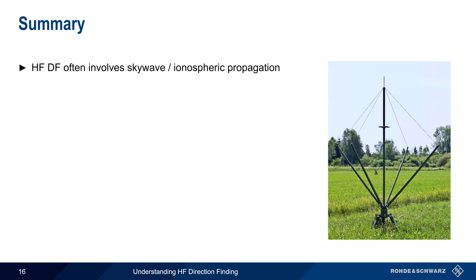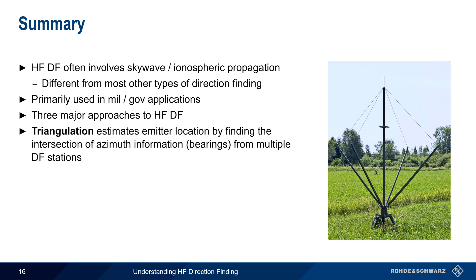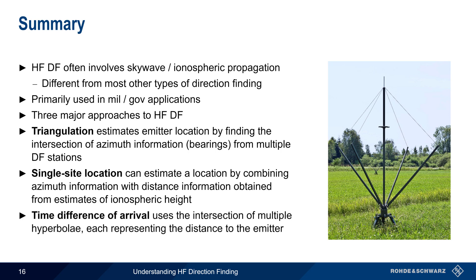Let's end with a brief summary. Direction finding at HF often involves skywave or ionospheric propagation, and this is what most often distinguishes HF-DF from other forms of direction finding. HF-DF is primarily performed in military and government applications, including general spectrum monitoring, interference hunting, and search and rescue operations. There are three major approaches: triangulation, the oldest and simplest, estimates emitter location by combining azimuth information from multiple geographically separated stations; single site location can estimate emitter location using only a single station but requires knowledge of ionospheric conditions to obtain distance along a line of bearing; and time difference of arrival calculates emitter location by comparing the different times at which a signal was received at different locations.